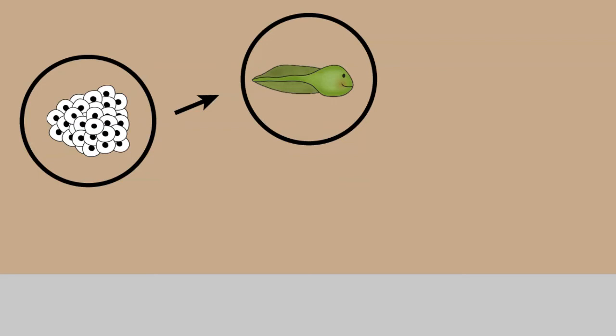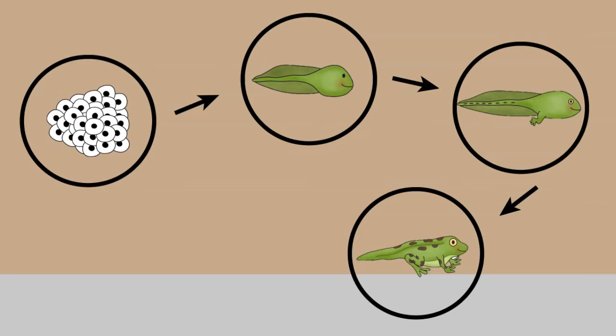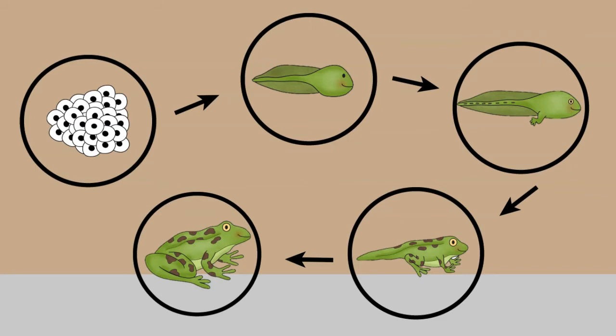As it gets bigger, its tail becomes smaller and it starts to grow legs. It is now a froglet. The froglet continues to grow and now its front legs appear. Its tail shrinks even more. When the tail finally disappears, it is now a frog.